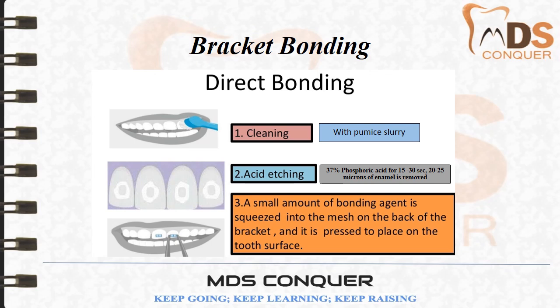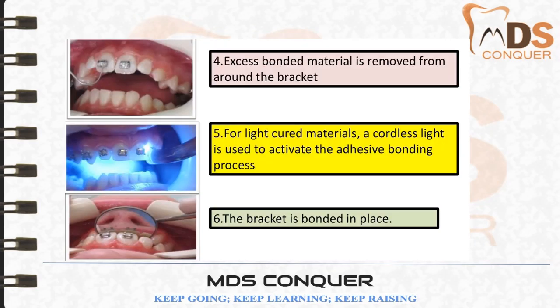After etching, primer is applied and cured. Once priming is done, the bonding agent is placed on the mesh of the back of the bracket, and the bracket is pressed onto the tooth surface. Excess bonding material is removed from the surroundings, the positioning is checked, and the bracket is cured with a light curing system.